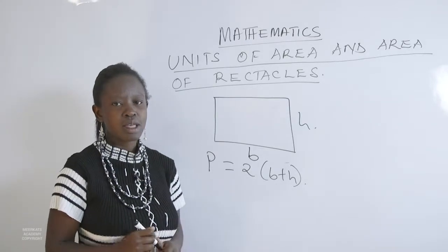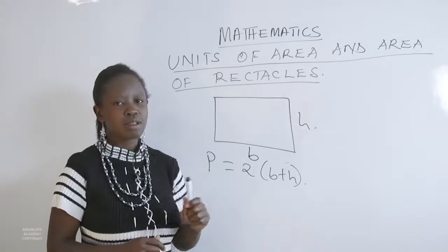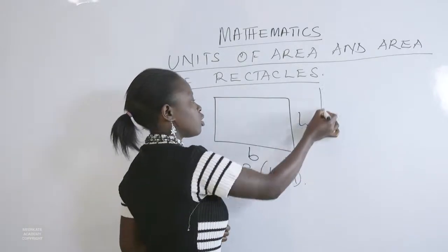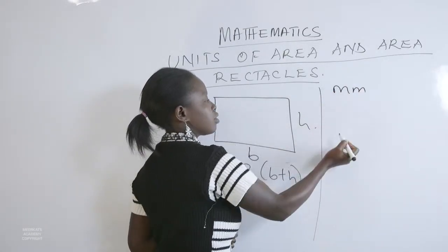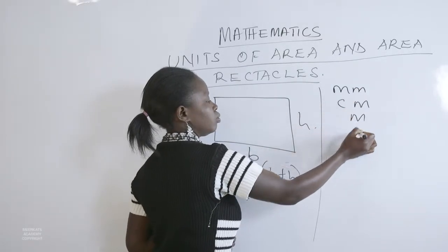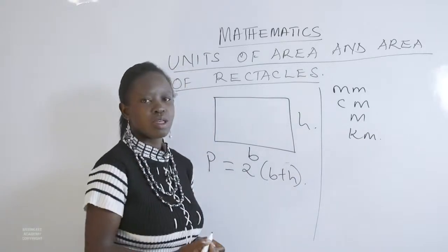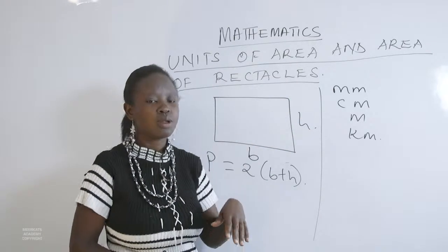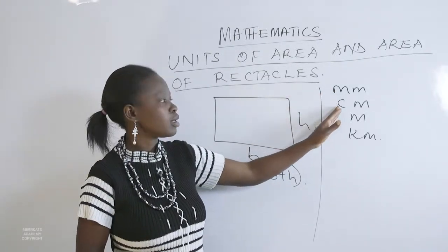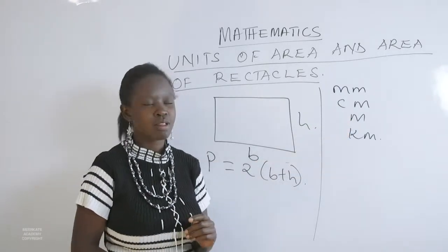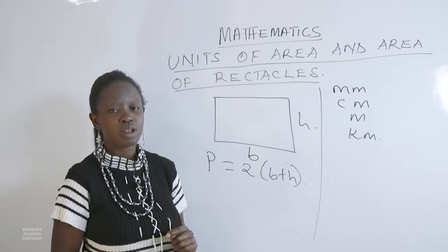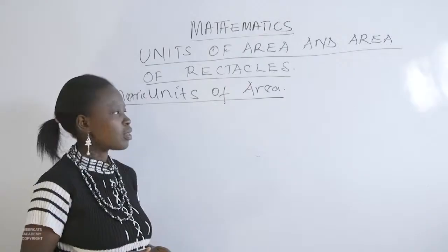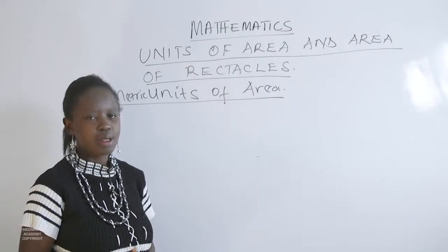But what we are looking at now is area. Let us start by asking ourselves: what units do we use in area? In perimeter, we discovered that we use units like millimeters, centimeters, meters, or kilometers. Those are the units we use when dealing with perimeter. But now we want to find out how we get the units of area. So the metric units of area that we are going to look at.